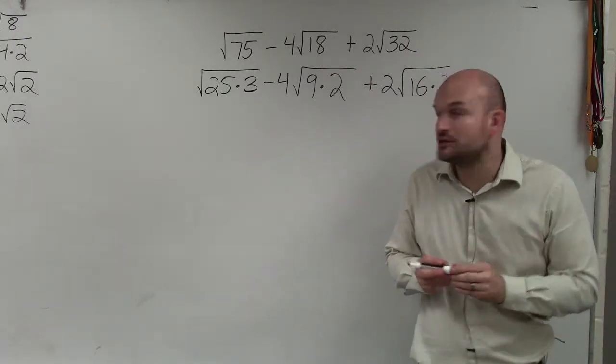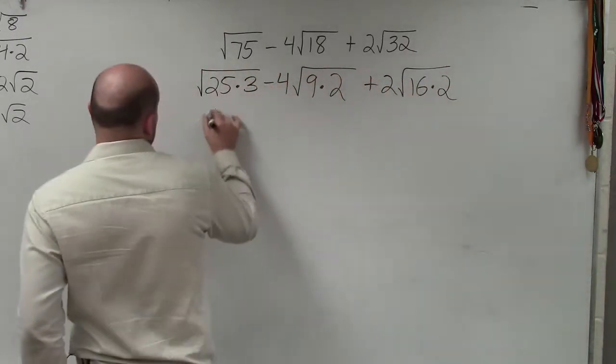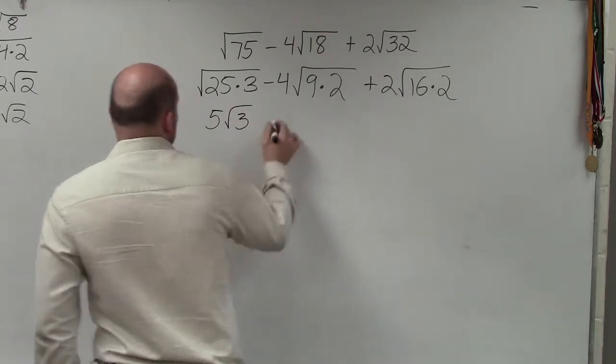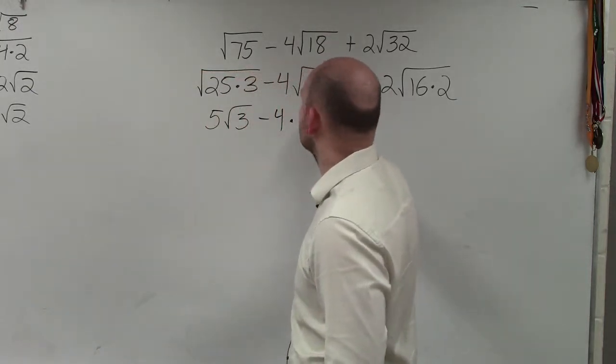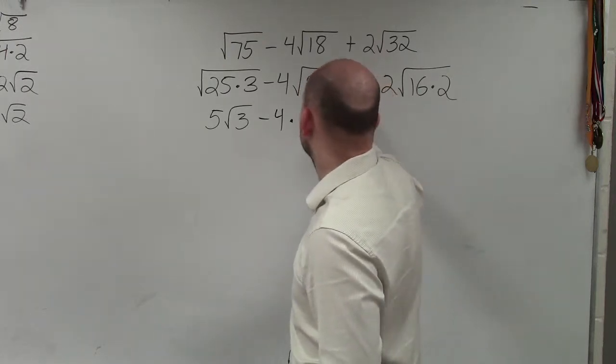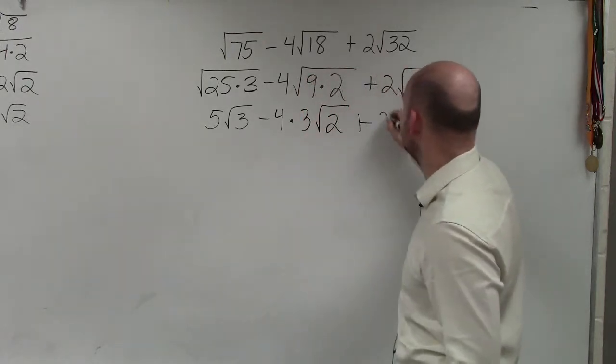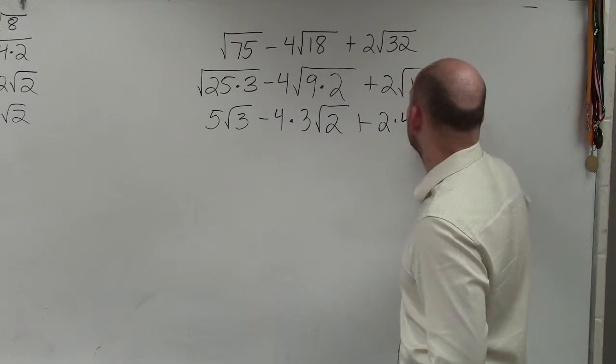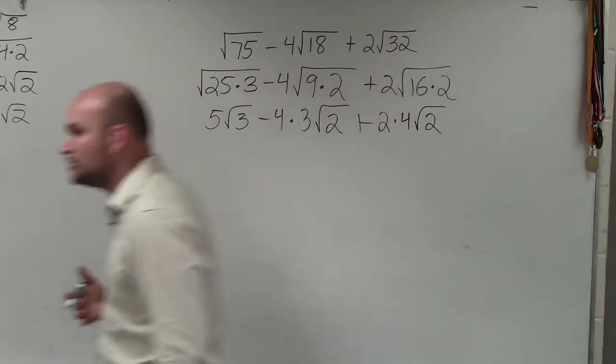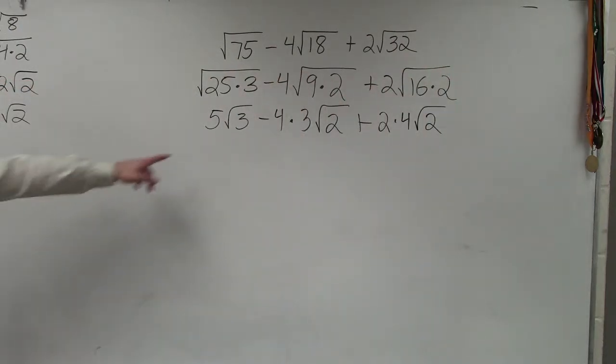So when I go ahead and take the square root of 25, I obtain 5 times square root of 3. When I obtain the square root of 9, I obtain square root of 9 is 3. And square root of 16 is 4. Now it's important when those numbers come out of the square root that they're still being multiplied by a number that was in front.